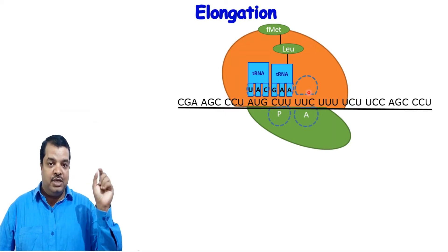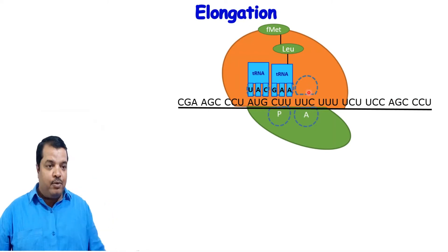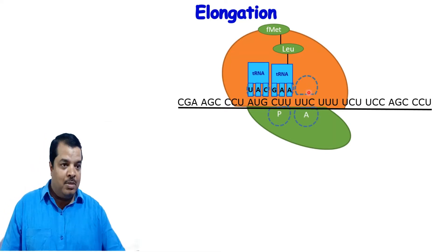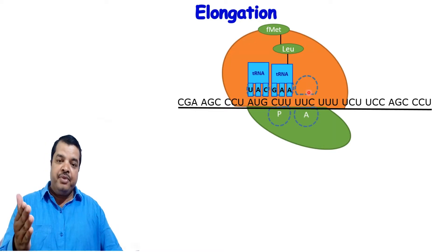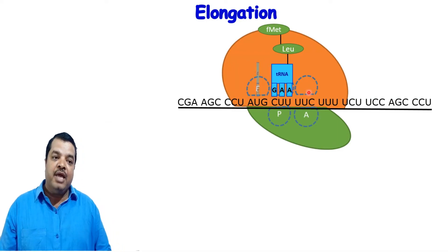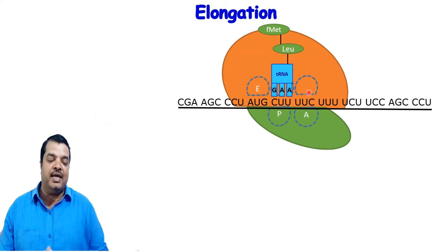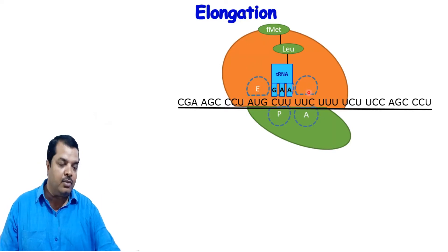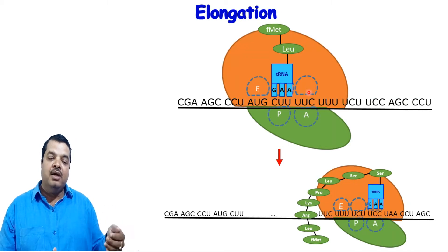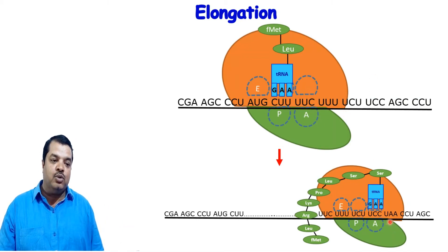This continues until termination. When the ribosome moves forward, the vacant tRNA exits through the exit site — because the amino acid has been transferred and the next amino acid is prepared. This vacant tRNA undergoes hydrolysis and is removed. Elongation continues until the termination codon is reached. The stop codon here is UGA, and up to this point the process is called elongation.